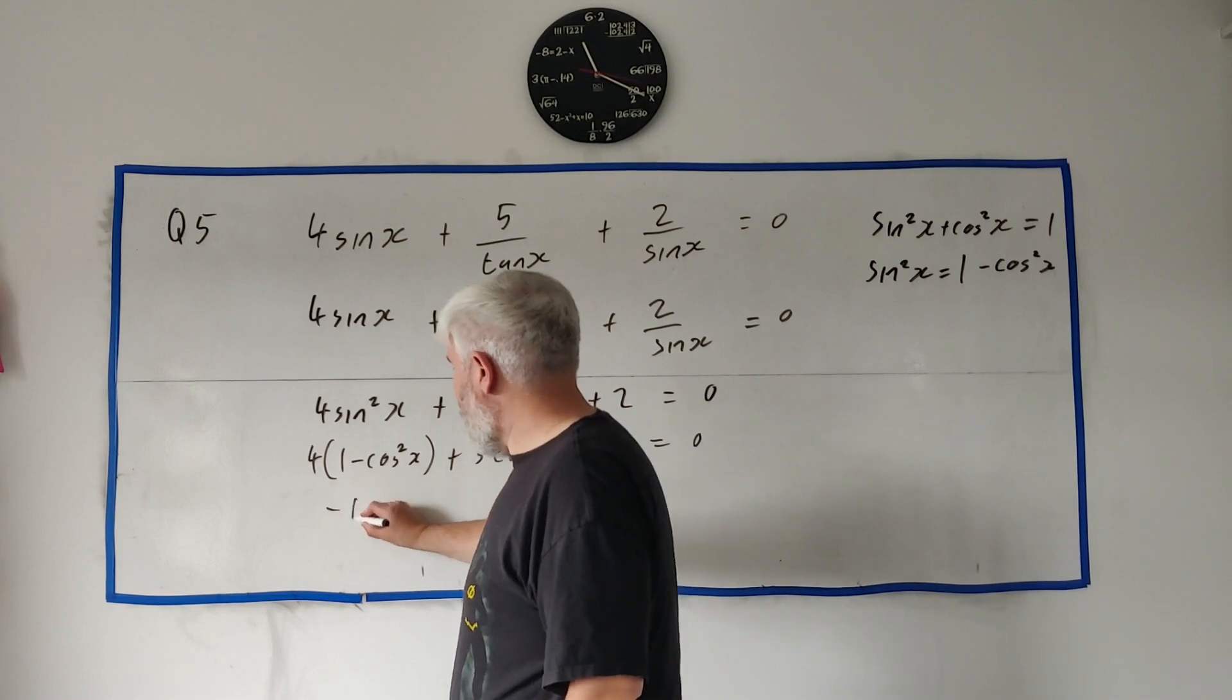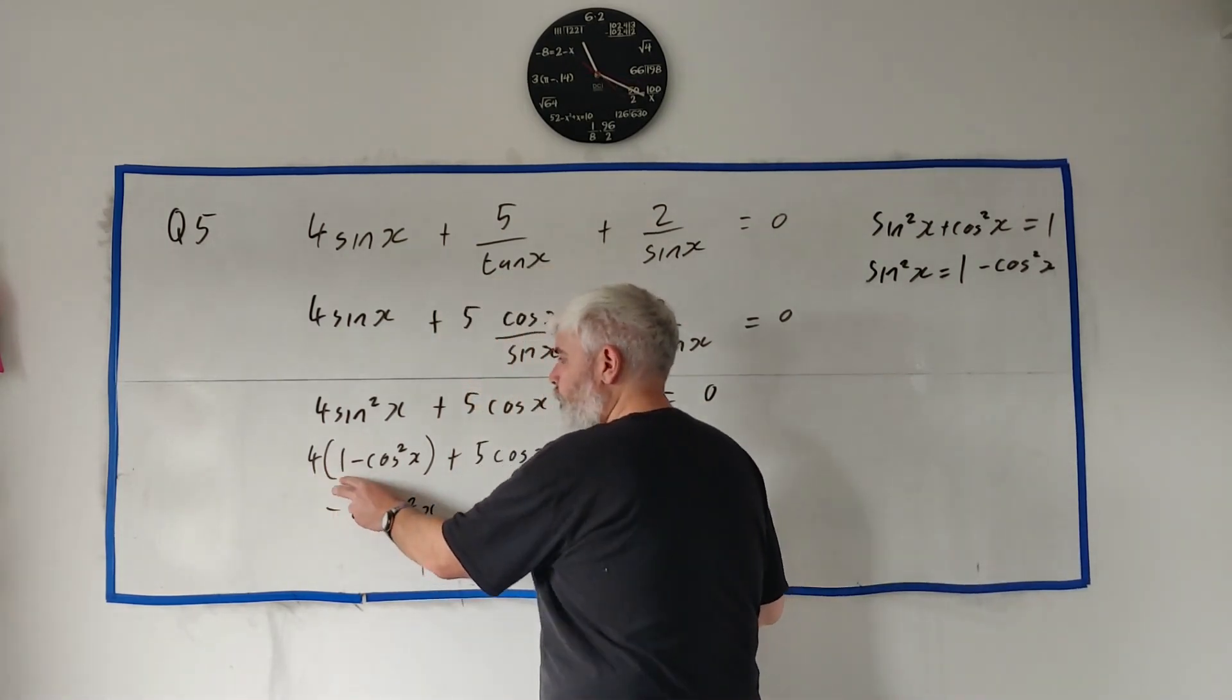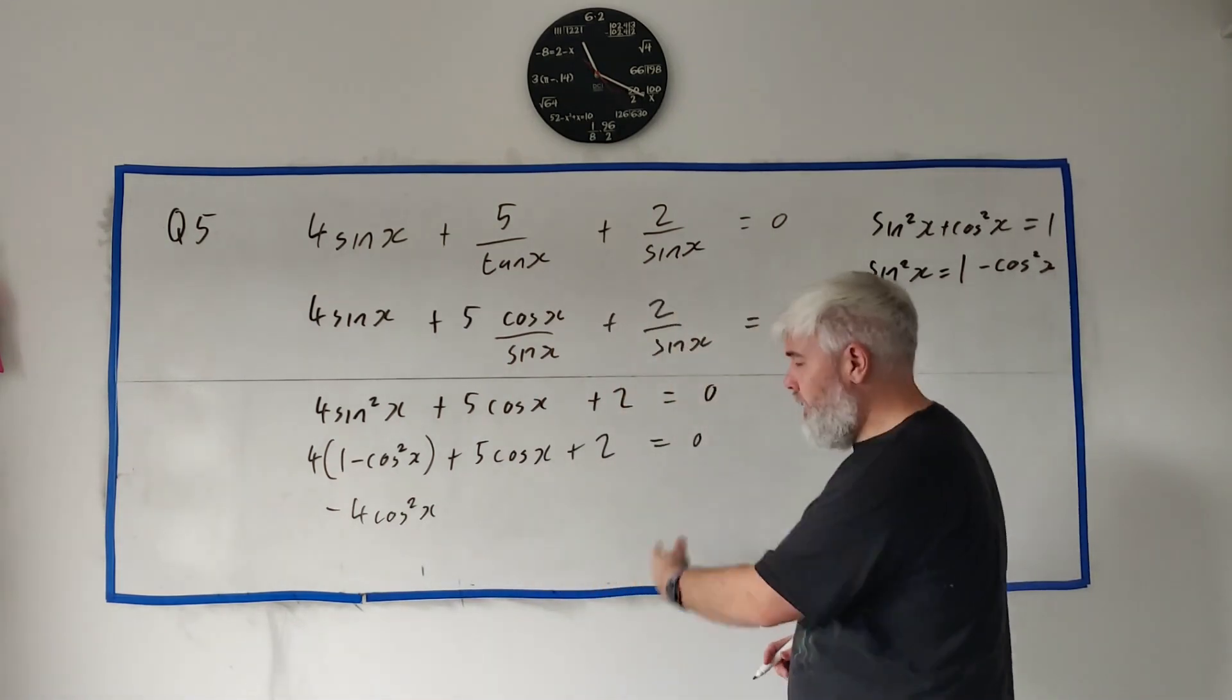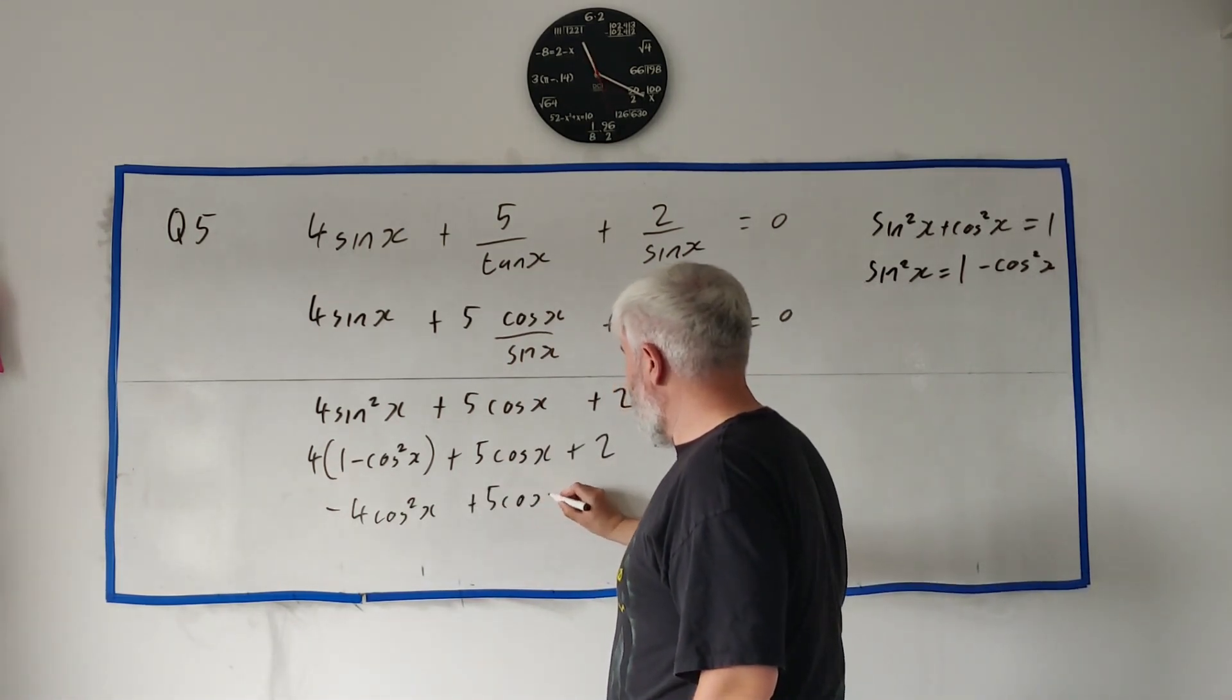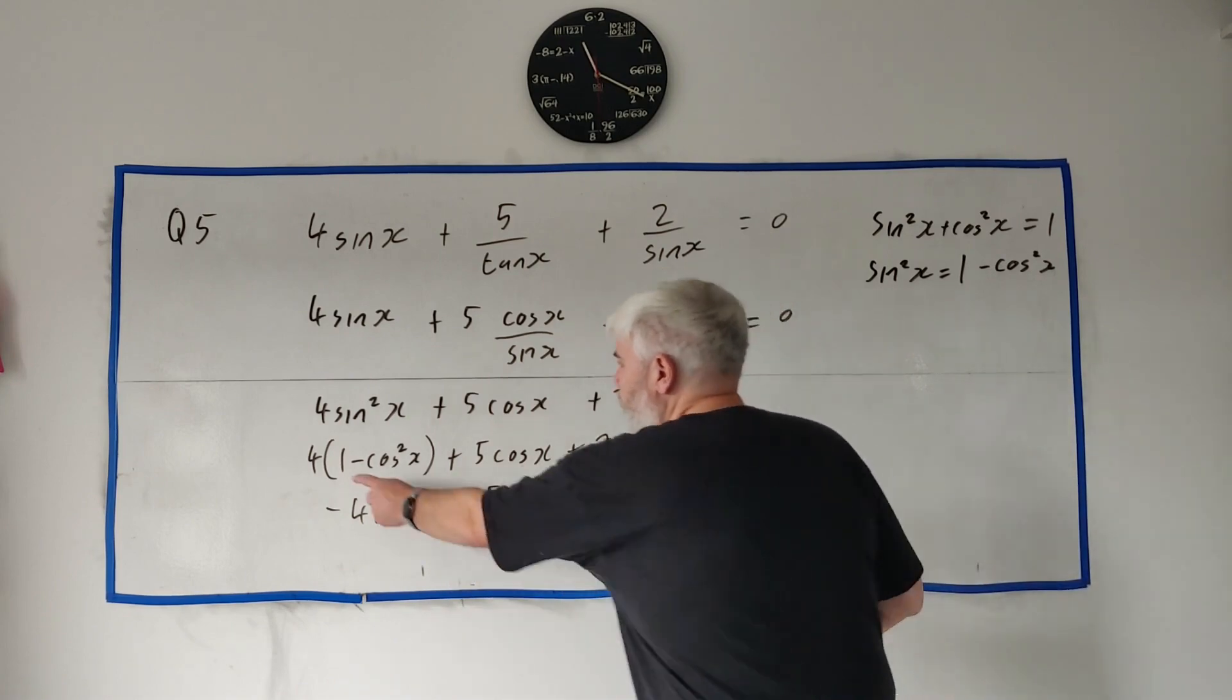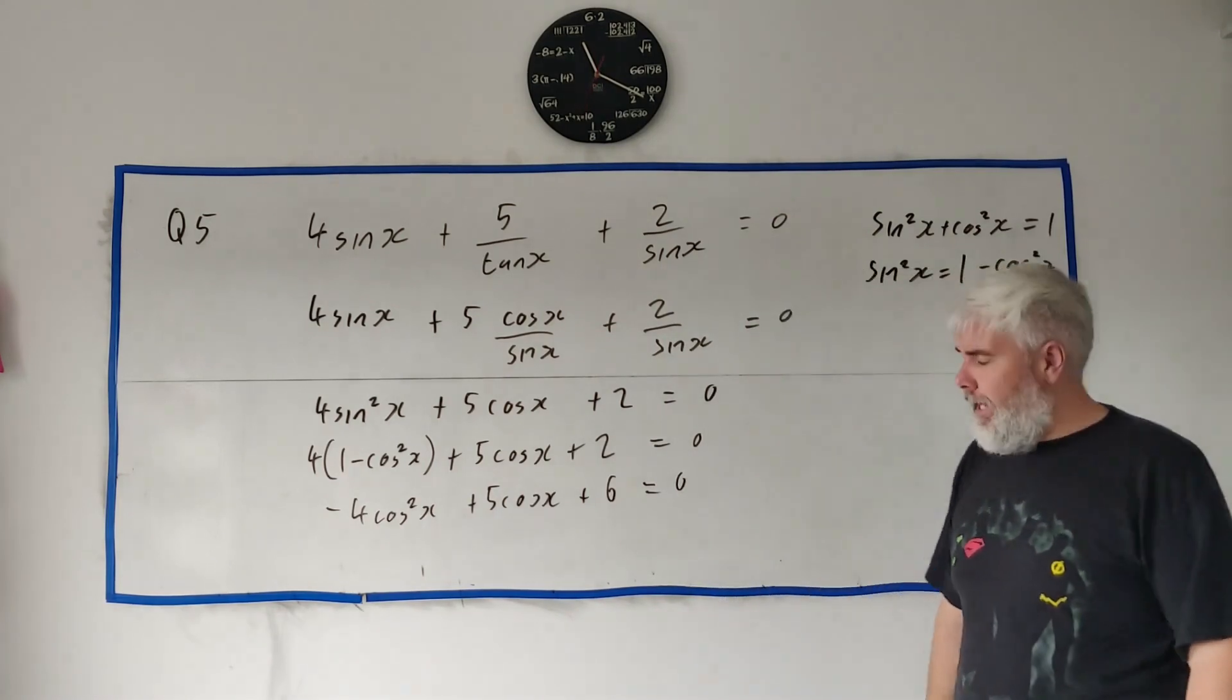We need to clean this up here. This would be minus four cosine squared. Four times one, we'll put that down here in a moment. That'll be five cosine x. And this four plus this two will be a six.